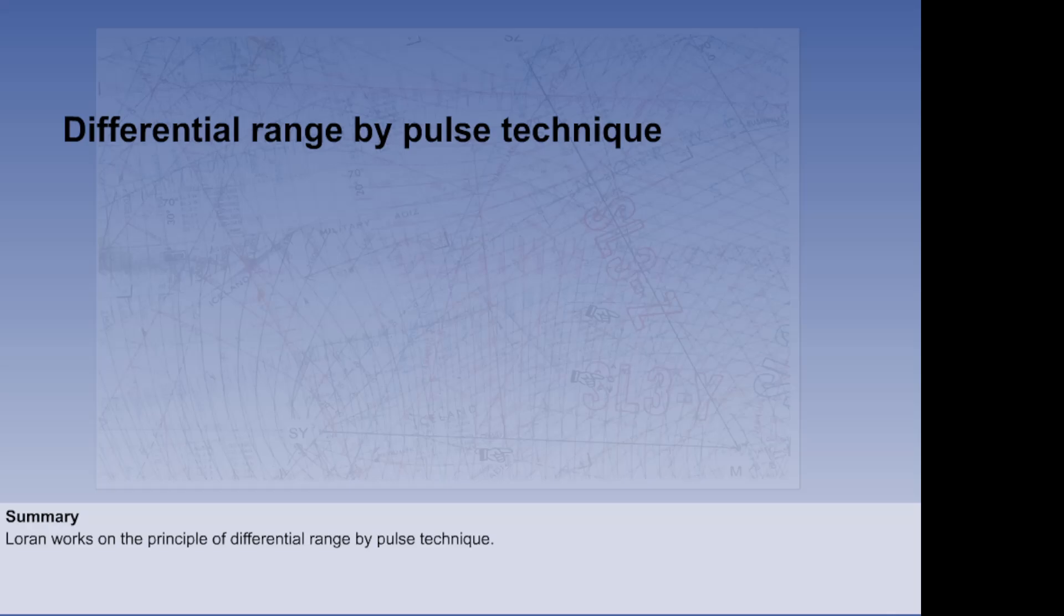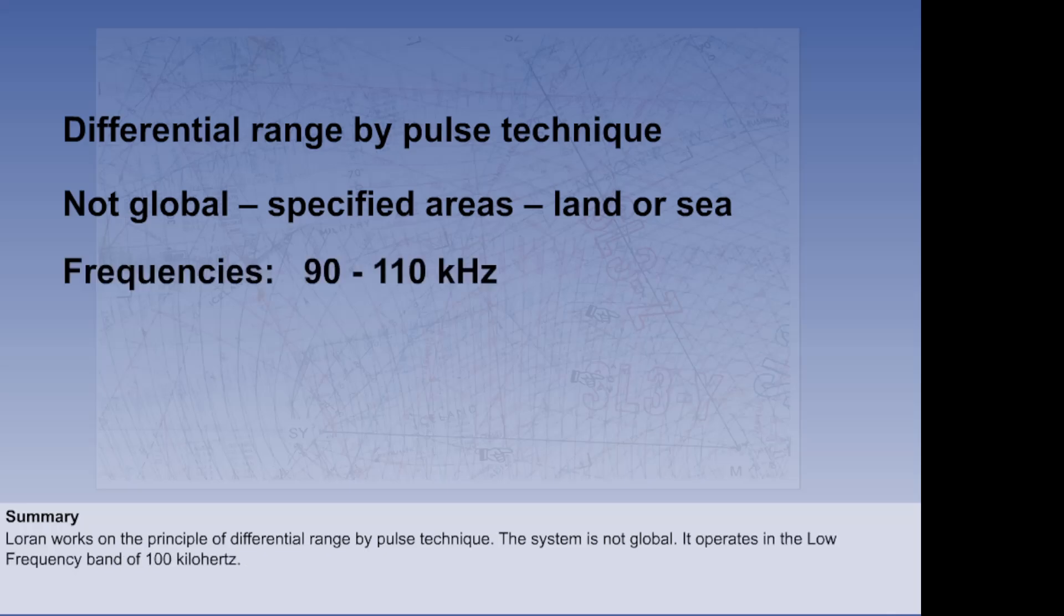In this lesson, we have seen that LORAN works on the principle of differential range by pulse technique. The system is not global. It may be used over specified areas where a chain of transmitters still exists. These may be over land or sea. It operates in the low frequency band of 100 kHz.